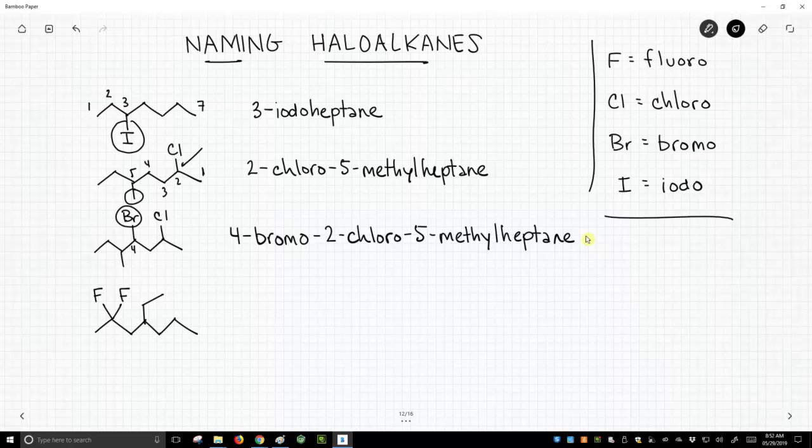Now lastly, we have another heptane. We're going to number from the left because our branch point is on carbon 2 with these two fluorines. And so we have two fluorines and we have an ethyl at carbon 4. Ethyl comes before fluoro, so we'll say 4-ethyl. Now the two fluorines, we have to give them both position numbers and we use difluoro. So this would be 4-ethyl-2,2-difluoroheptane.